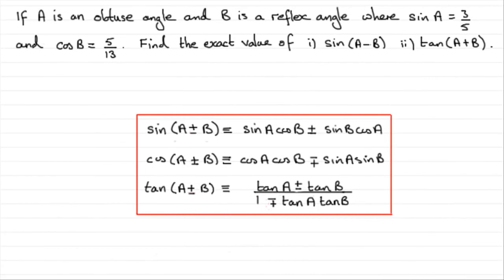Hi, I've got here a typical example that you'll get in many textbooks and possibly on exam papers based around the compound angle formulas. What we've got is if A is an obtuse angle and B is a reflex angle where sine A equals 3 fifths and the cosine of B equals 5 thirteenths. Find the exact value of sine of A minus B and then the tan of A plus B.